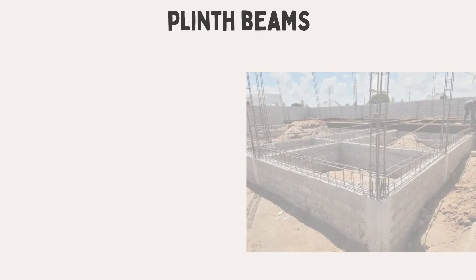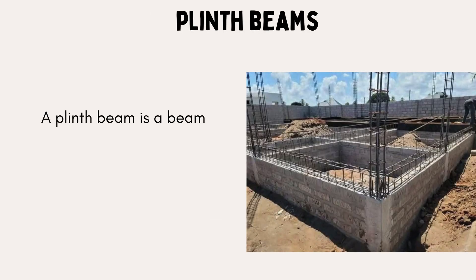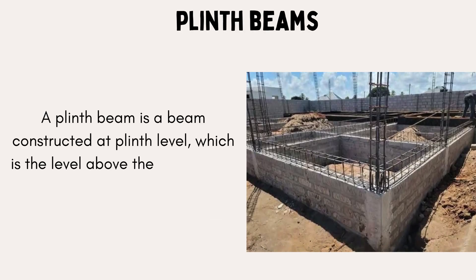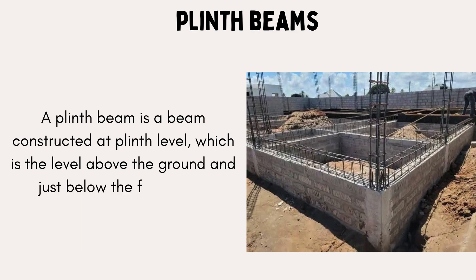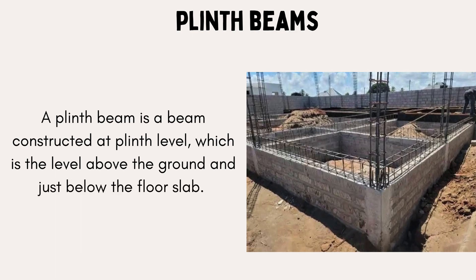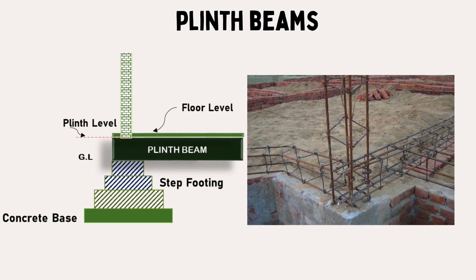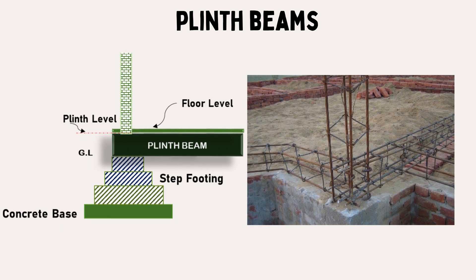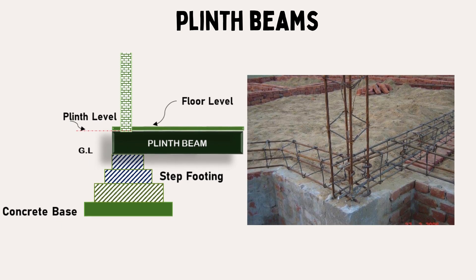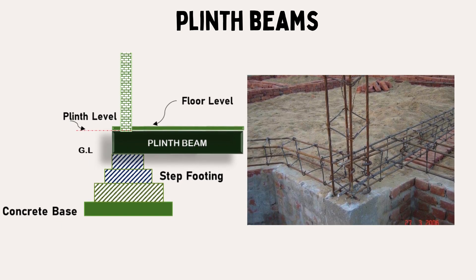A plinth beam is a beam constructed at plinth level, which is the level above the ground and just below the floor slab. It is used to tie the columns together, support the walls above, and reduce the risk of differential settlement between structural members.